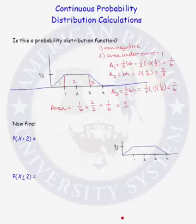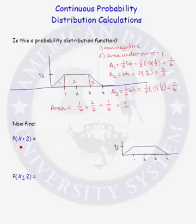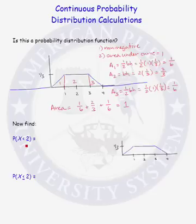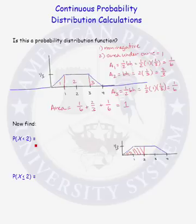Now that we have a probability distribution function, let's answer some probability questions. Our first question is: what is the probability that our random variable is less than 2? To find probabilities for continuous distributions, we find the area under the curve in the region of interest. Our region of interest is x less than 2, so the probability is given by this shaded region.